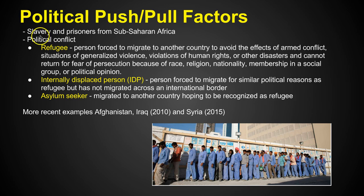Other political push-pull factors include political conflict, where we've got wars and conflicts between groups of people. There are terms that help us define whether people are able to migrate or not. Refugee is one of the most important terms — a refugee is a person who is forced to migrate to another country to avoid the effects of armed conflict, generalized violence, violation of human rights, or other disasters, and cannot return for fear of persecution because of race, religion, nationality, membership in a social group, or political opinion.